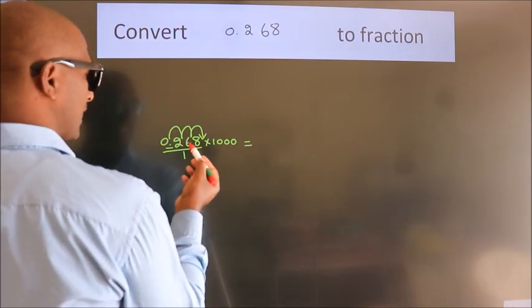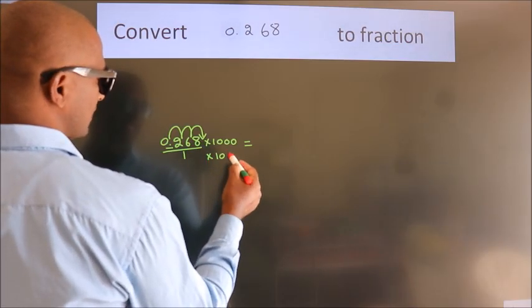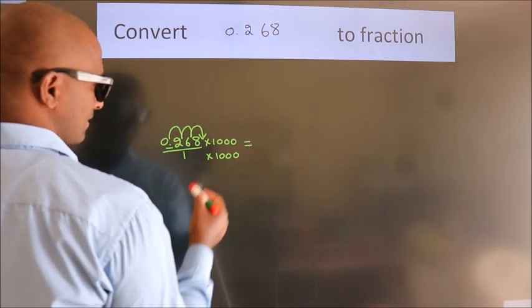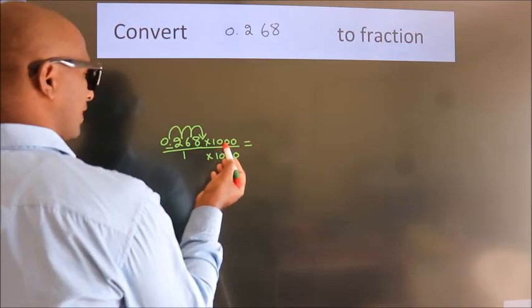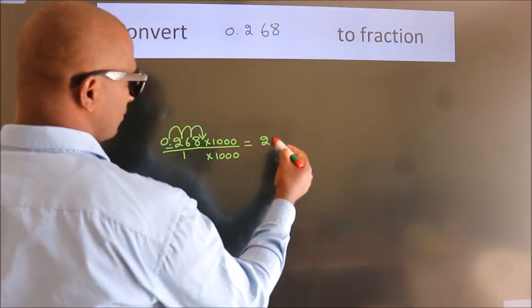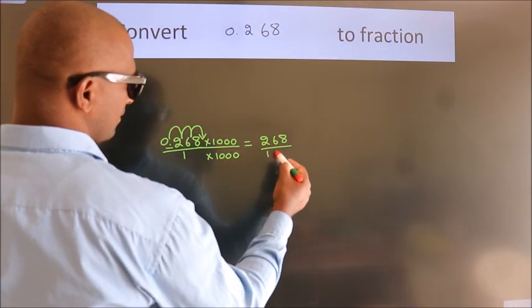Whatever number you are multiplying in the numerator, in the denominator also do the same. Next, 0.268 into 1000, 268. 1 into 1000, 1000.